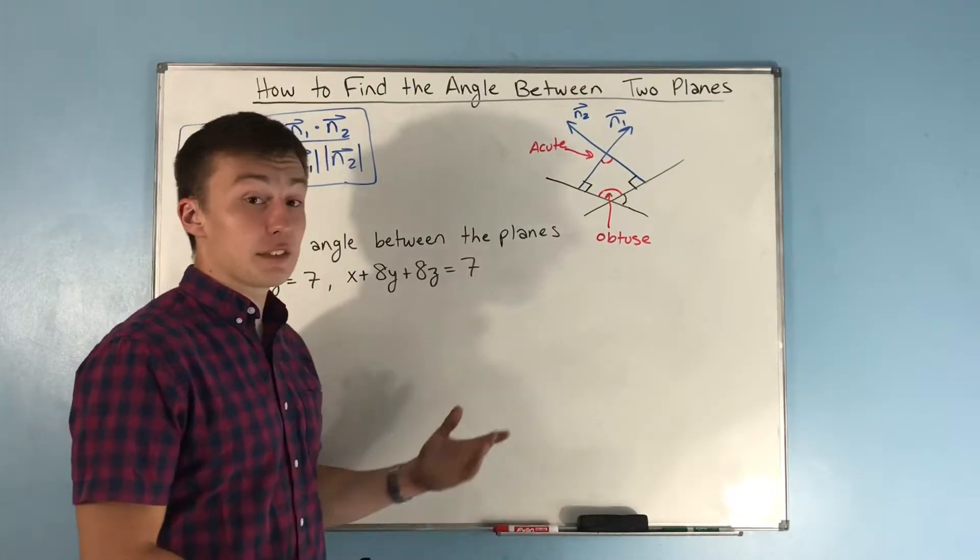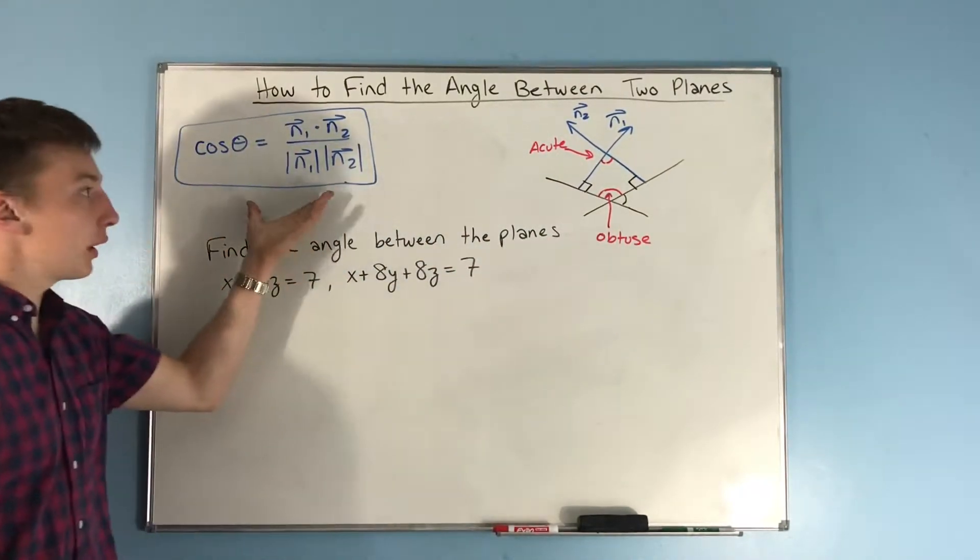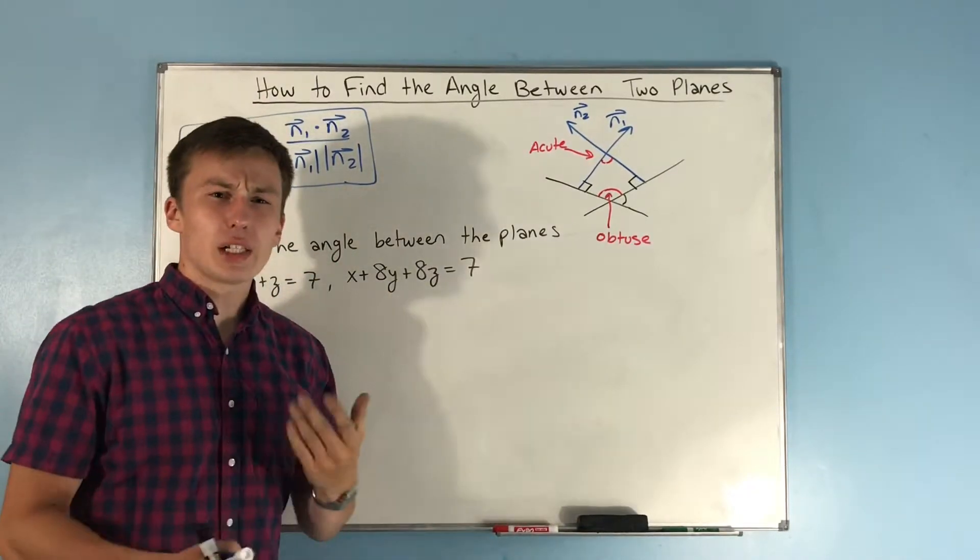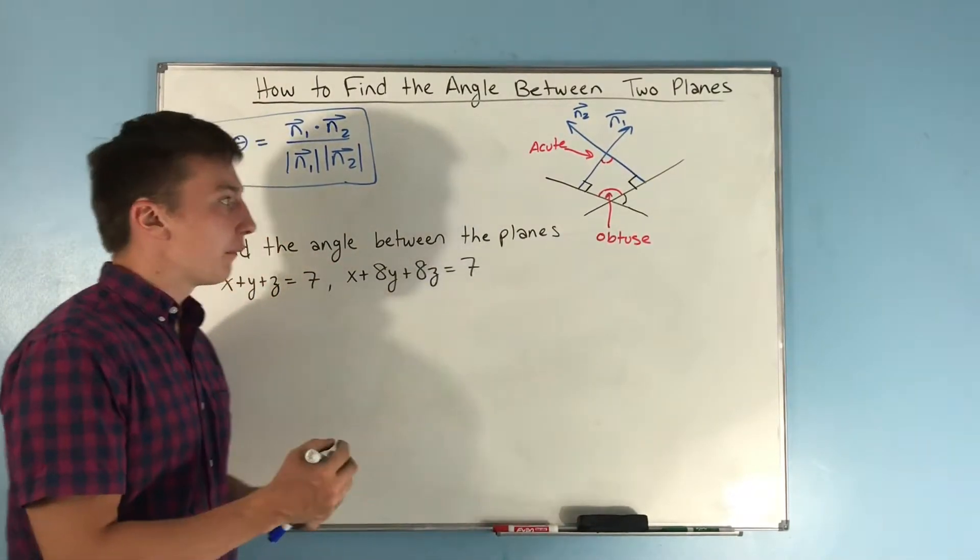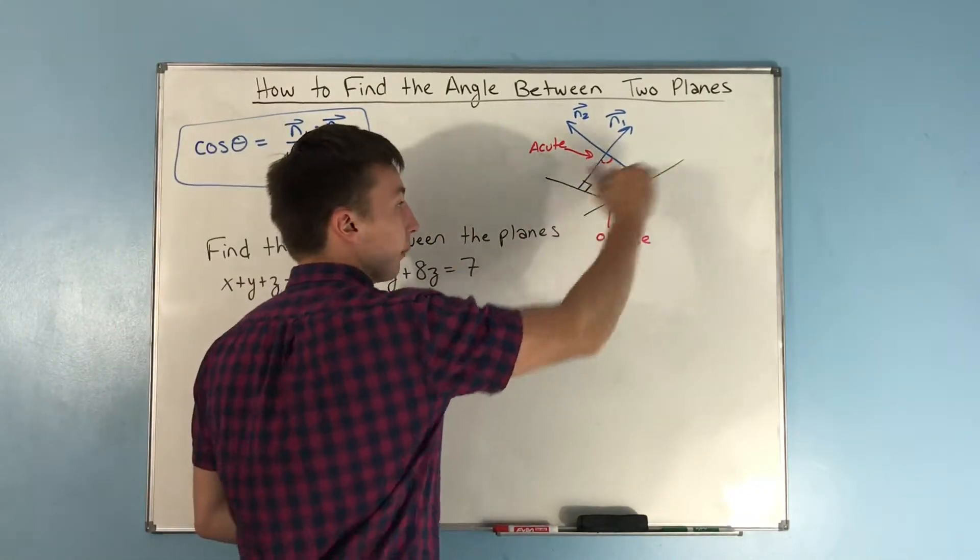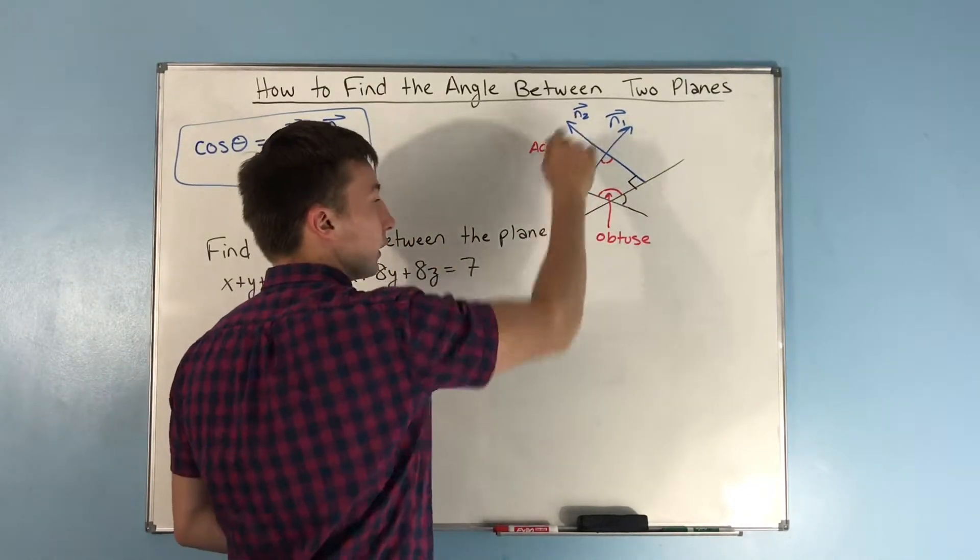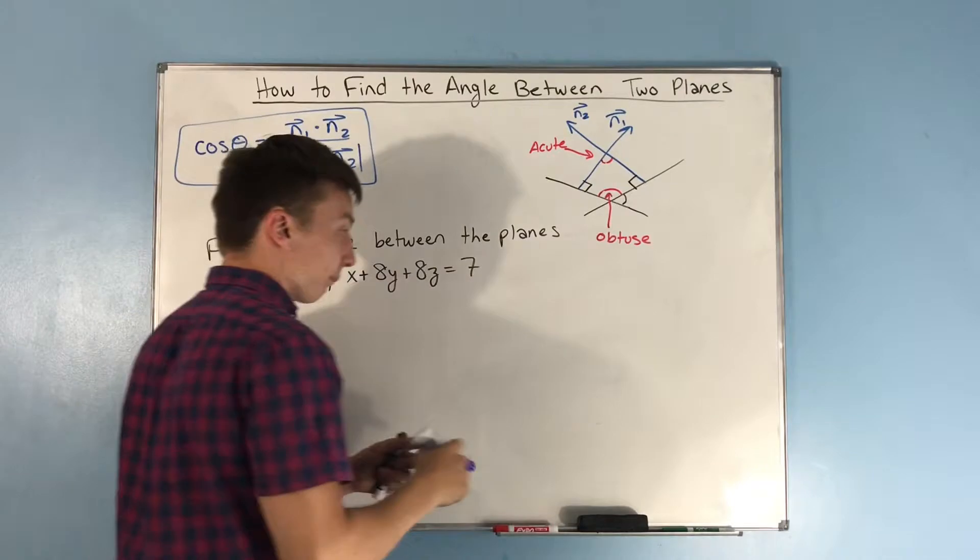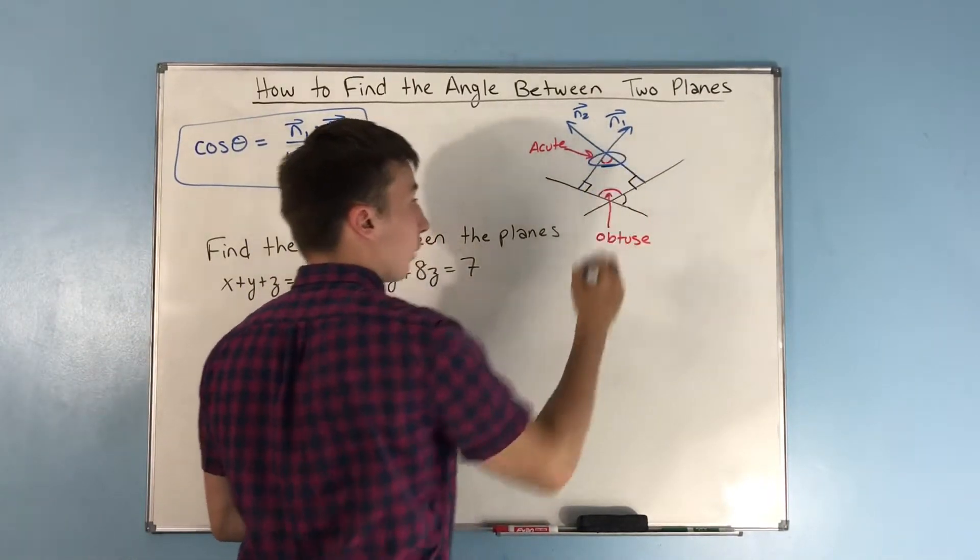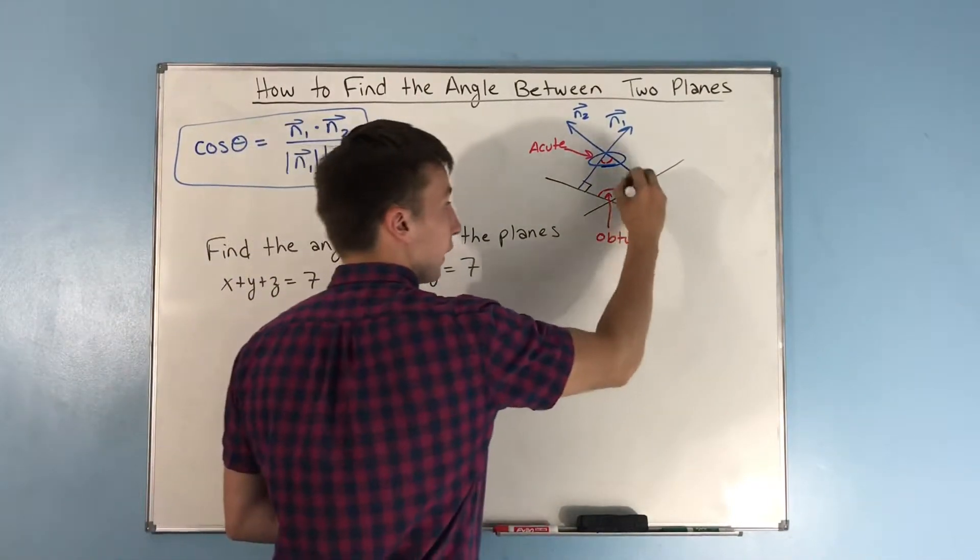So that's how it started to make sense for me, how this formula is actually working. And I wanted to kind of show you that. I hope that didn't confuse you at all. Really, this is just drawing two planes here in black, and then I drew normal vectors, and then I showed you that, well, this angle right here is equal to this angle right here.